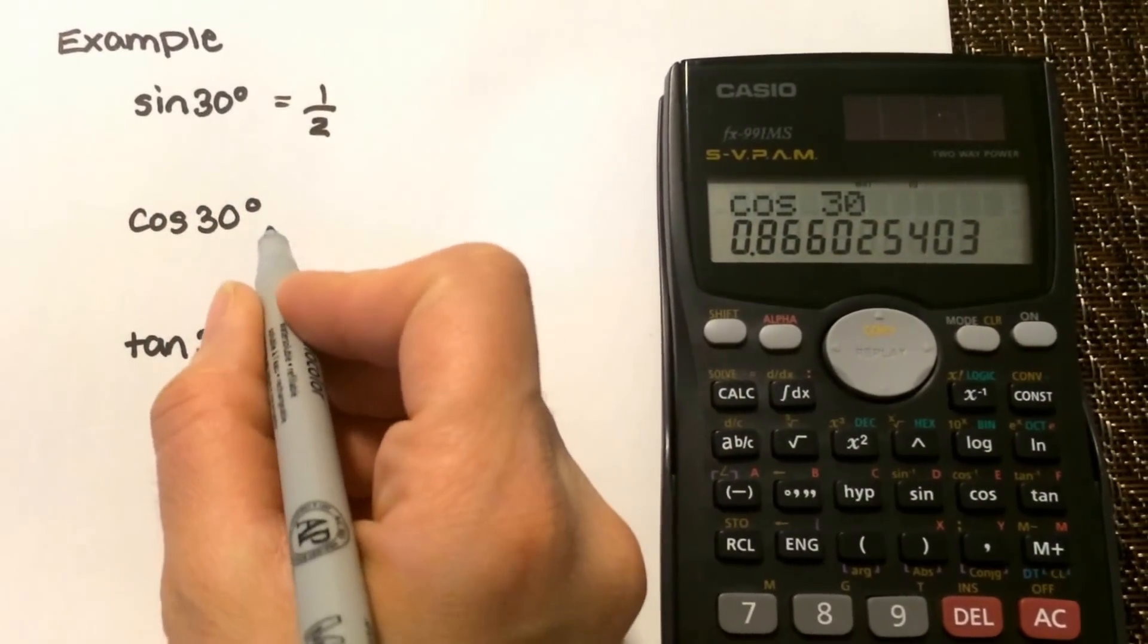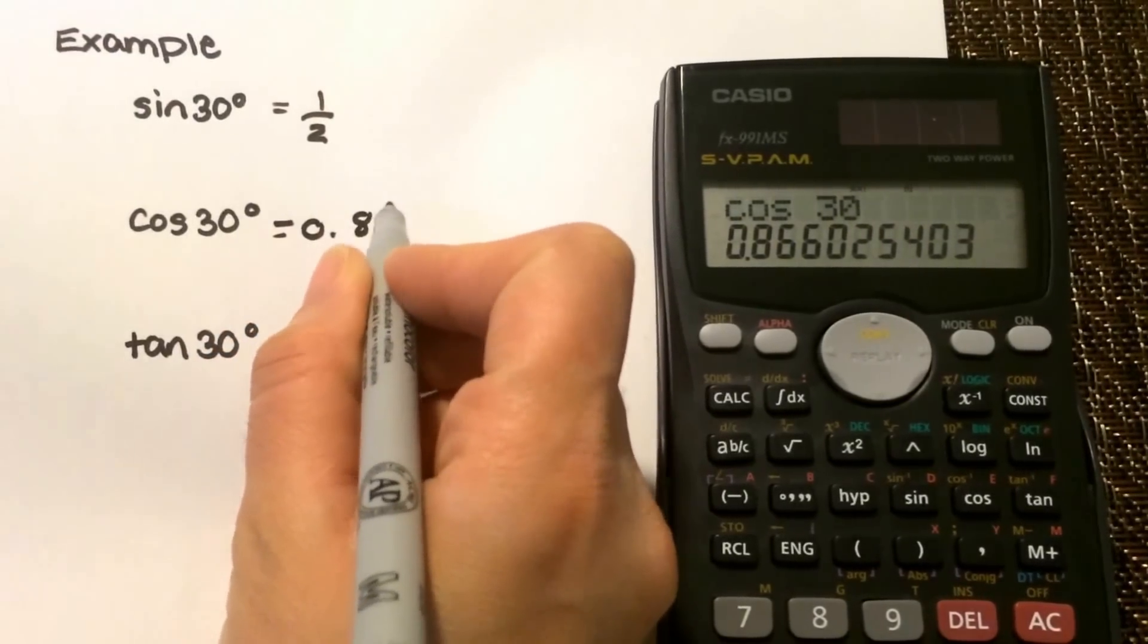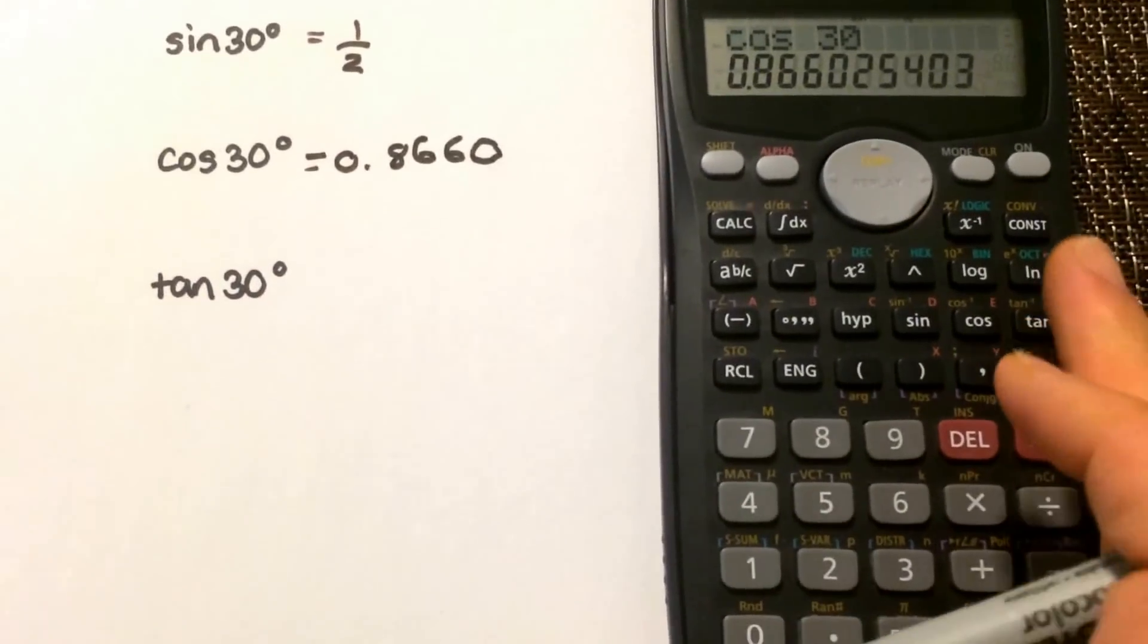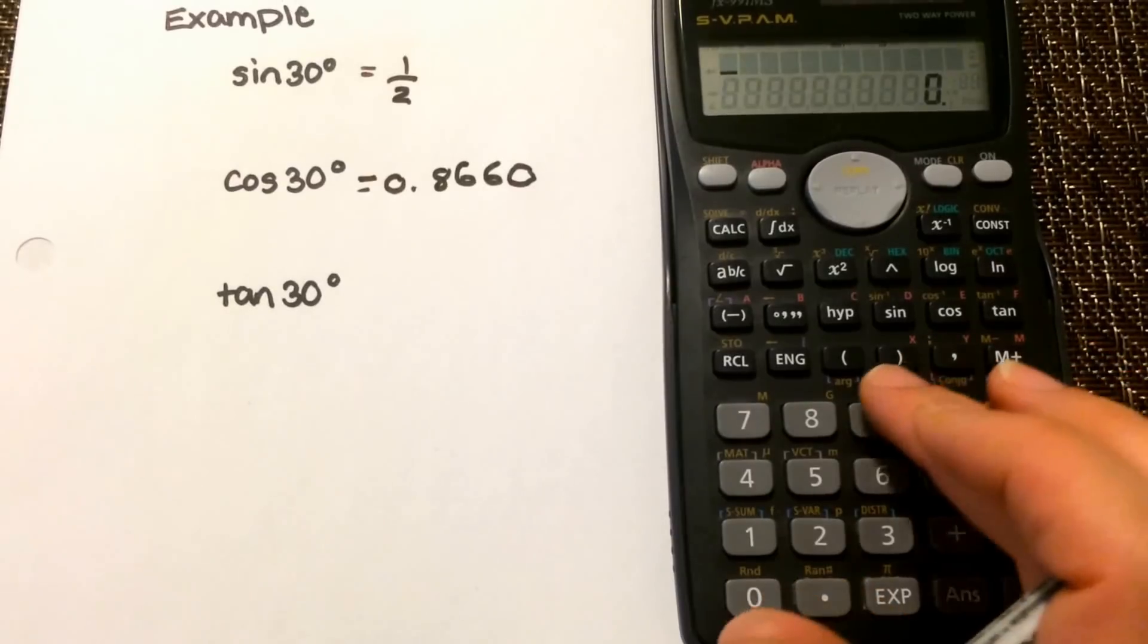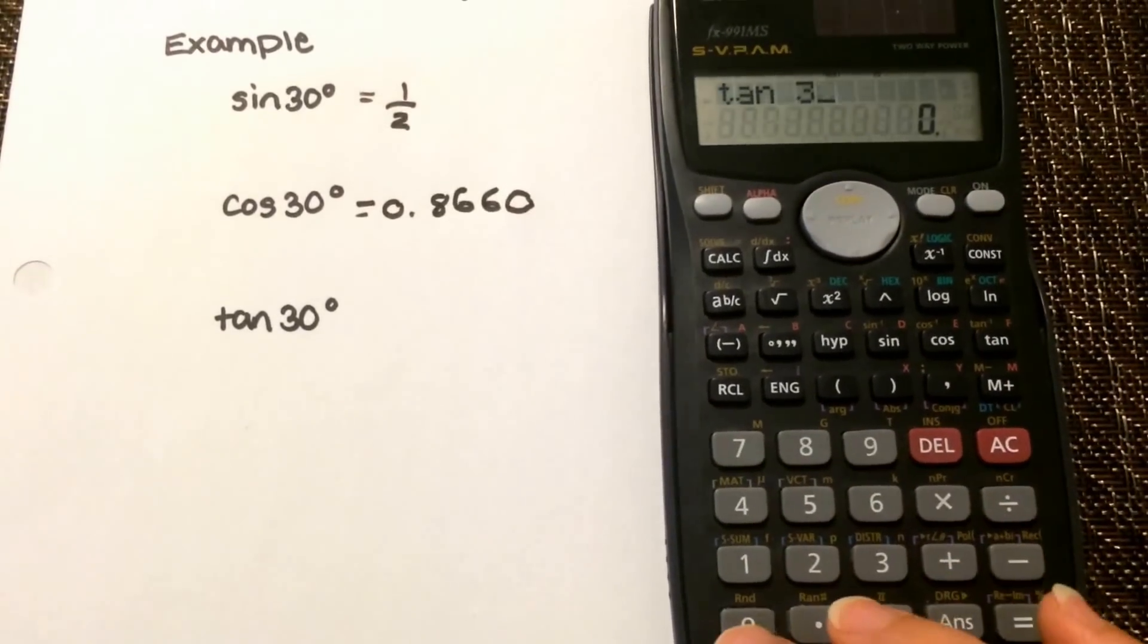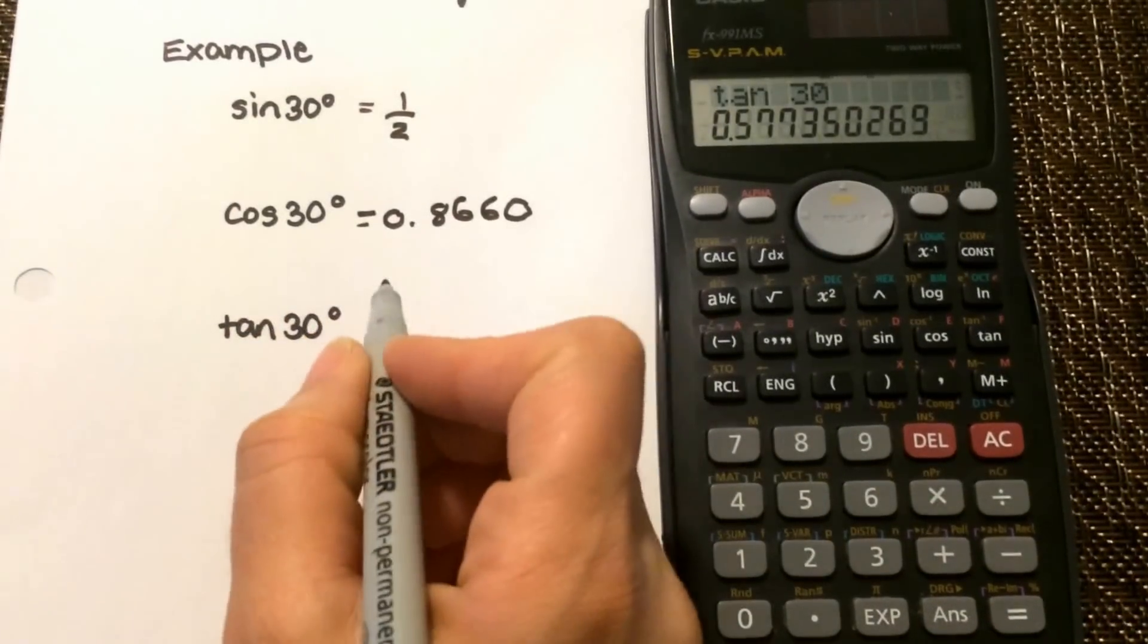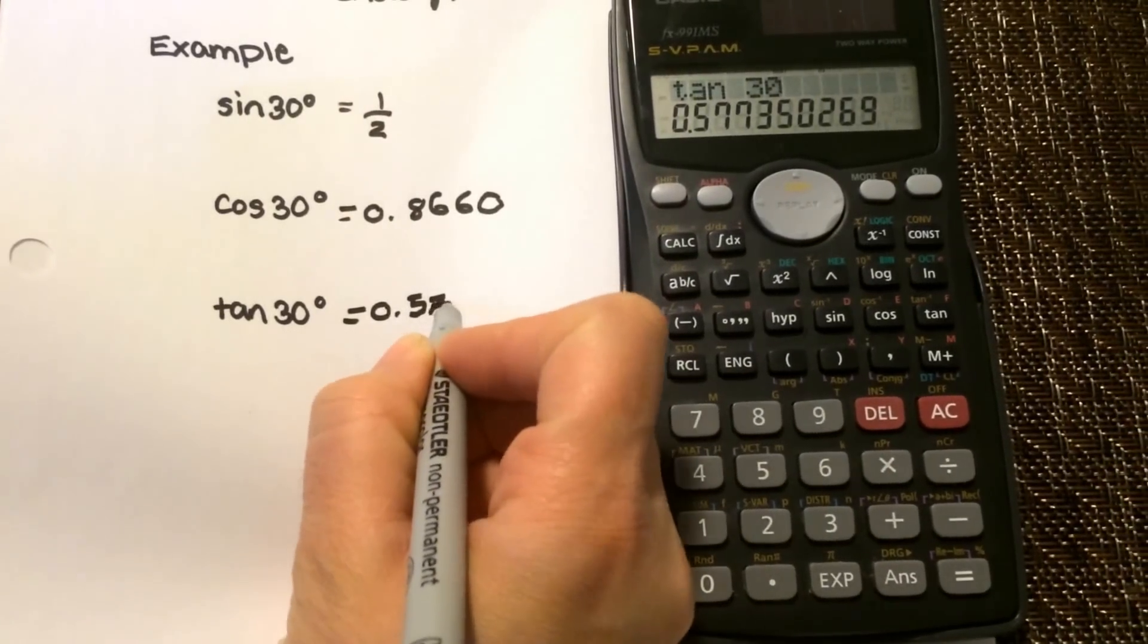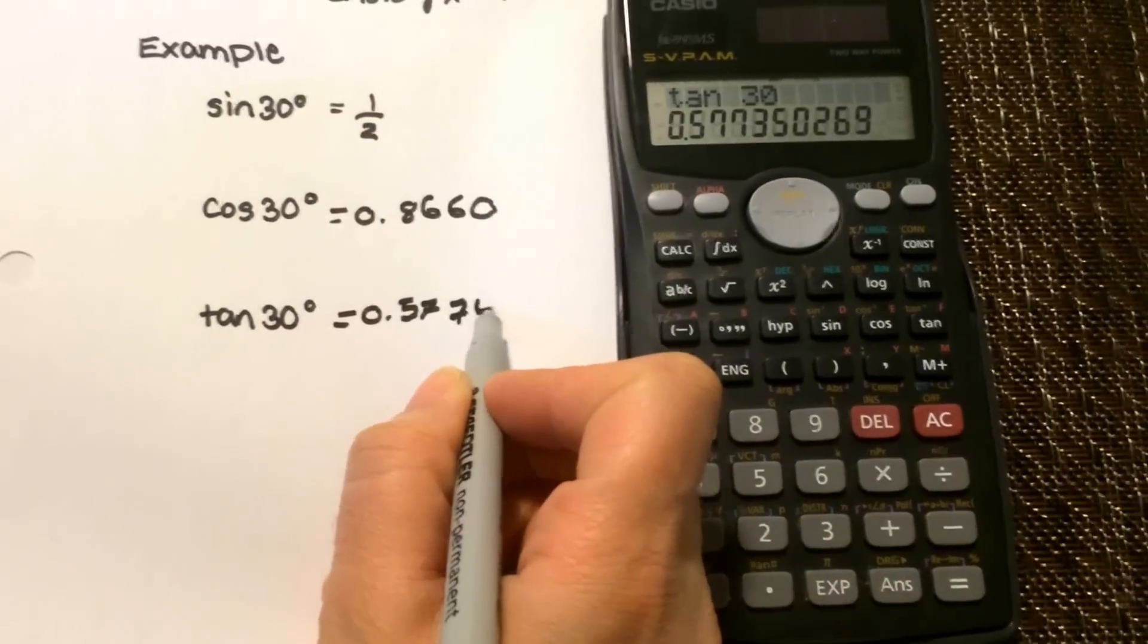So it's 0.8660, and then for tan of 30. Okay, you're gonna have to select tan and then 30 equals point five seven seven four rounded.